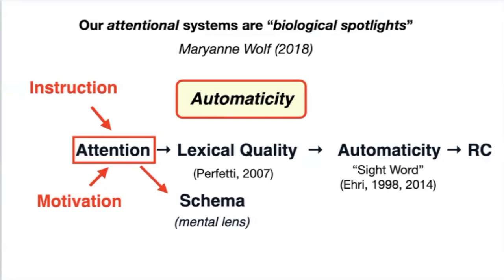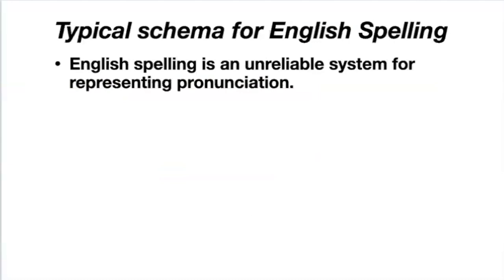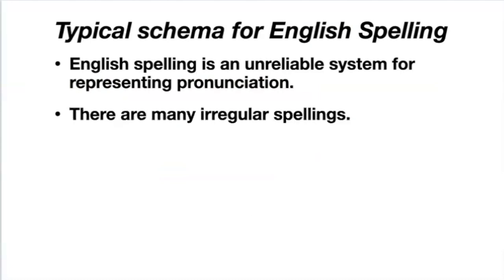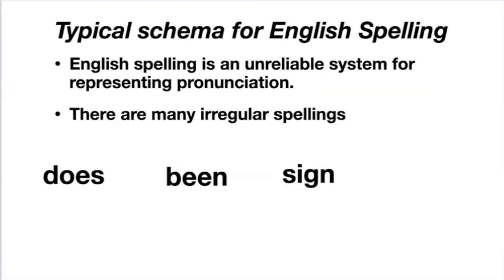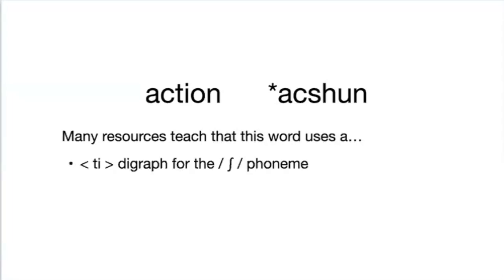So we should ask: how well does the typical schema for spelling match how spelling works? The vast majority of readers and writers in English would say English spelling is an unreliable system for representing pronunciation, and that there are many irregular spellings that have to be memorized, such as these. This schema is deeply flawed, however. Take the word 'action.' This word is not even typically taught as irregular, but consider the student who keeps misspelling it. Both spellings have possible grapheme-phonic correspondences for the pronunciation of 'action.' How can instruction best guide attention to automate the spelling that represents the pronunciation and the meaning of this word? Many resources teach us that this word uses a TI-digraph for the SH-phoneme, and that it has a TI-O-N suffix.